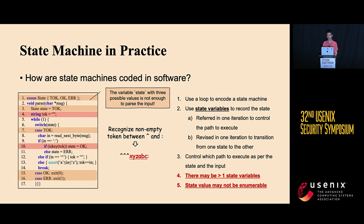The variable TOK is just like a state variable — it is not part of the input. Instead, it is determined by the historical data parsed by the state machine, and it decides the behavior of the parser. Its updates are similar to other state variables. For example, at the twelfth line, after the state machine reads a character symbol, TOK is reset to an empty string; otherwise, the input character is appended to the variable.